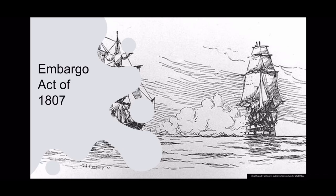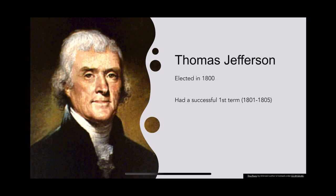The Embargo Act of 1807. Thomas Jefferson was elected president in 1800 in a very close election against Aaron Burr. He had a very successful first term, which lasted from 1801 to 1805. During this time he secured the Louisiana Territory from Napoleon Bonaparte for $15 million in 1803.